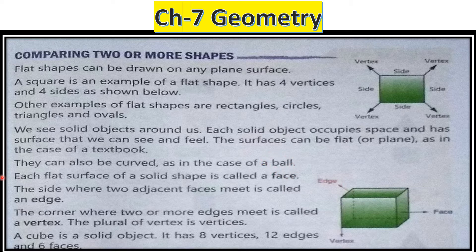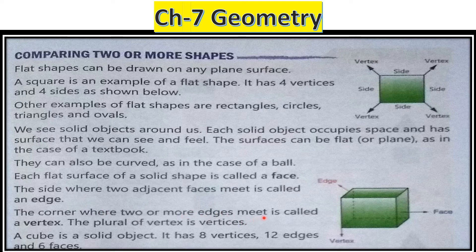Surfaces can also be curved, as in the case of a bowl — a solid shape in the shape of a sphere, compared with a ball. Each flat surface of a solid shape is called a face. The side where two adjacent faces meet is called an edge. The corner where two or more edges meet is called a vertex, and the plural of vertex is vertices.